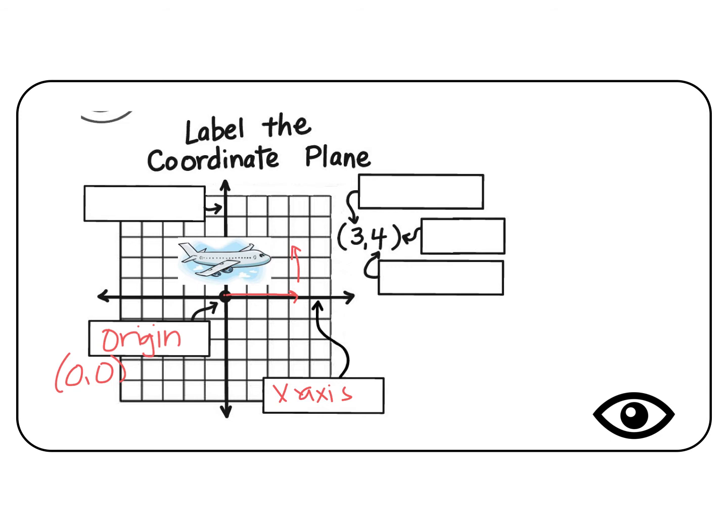Then when the plane lifts off and goes up, then we're talking about what we call the y-axis. The y-axis goes up and down, and you can think of it like x comes before y in the alphabet. Just like x comes before y in our axes, x comes before y in what we call an ordered pair.